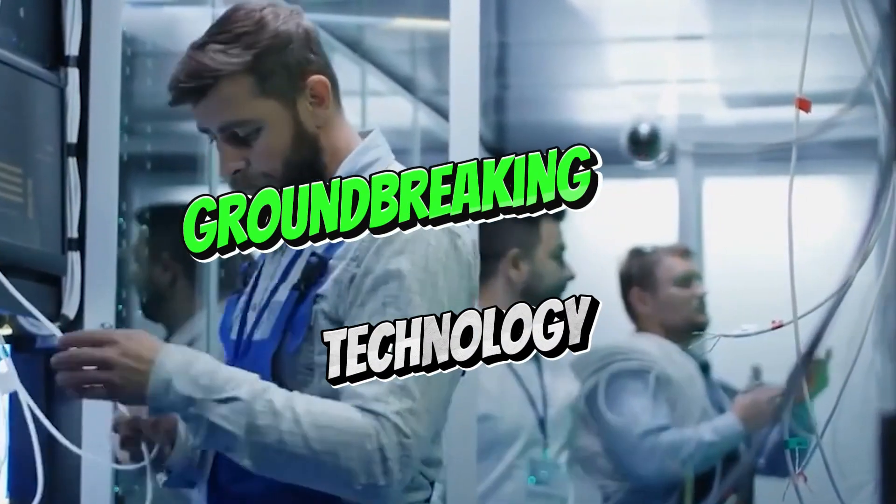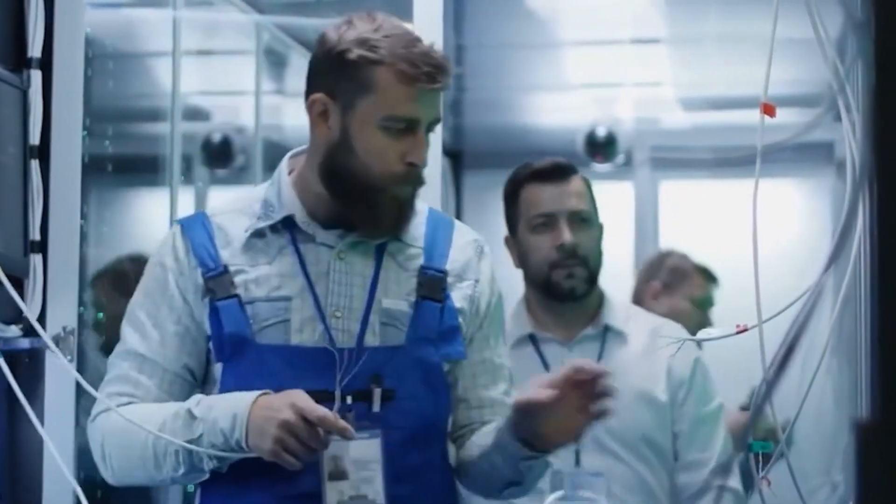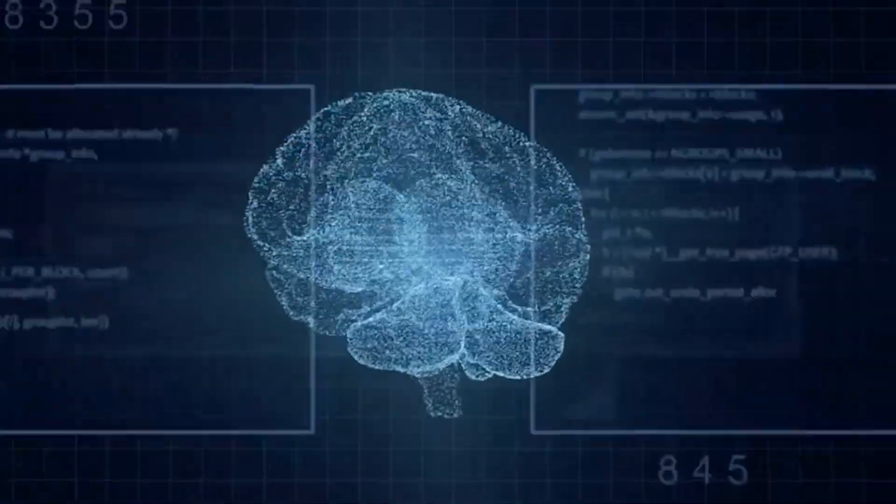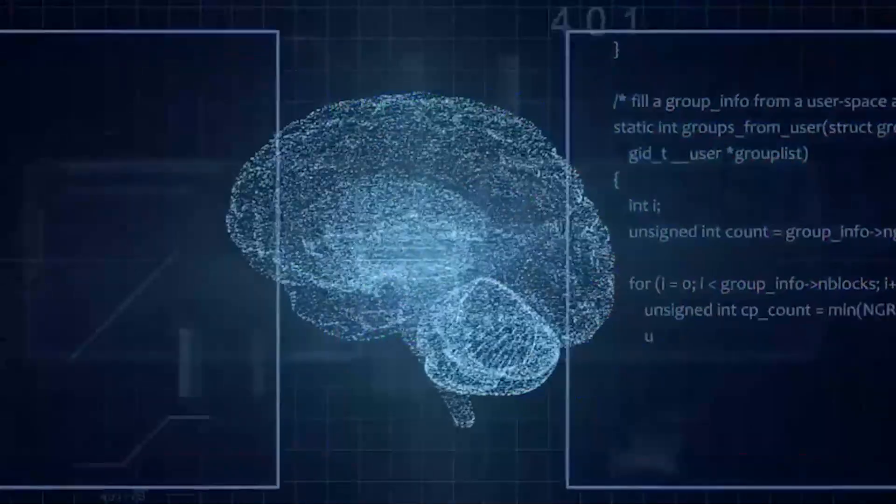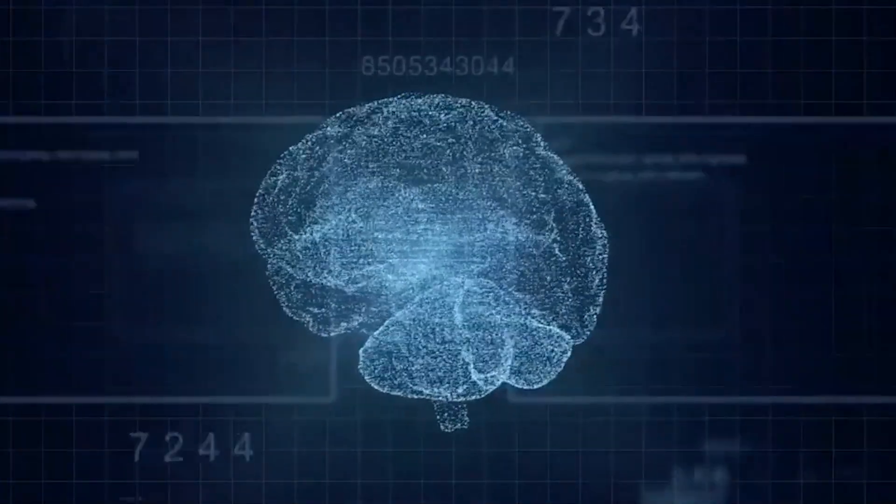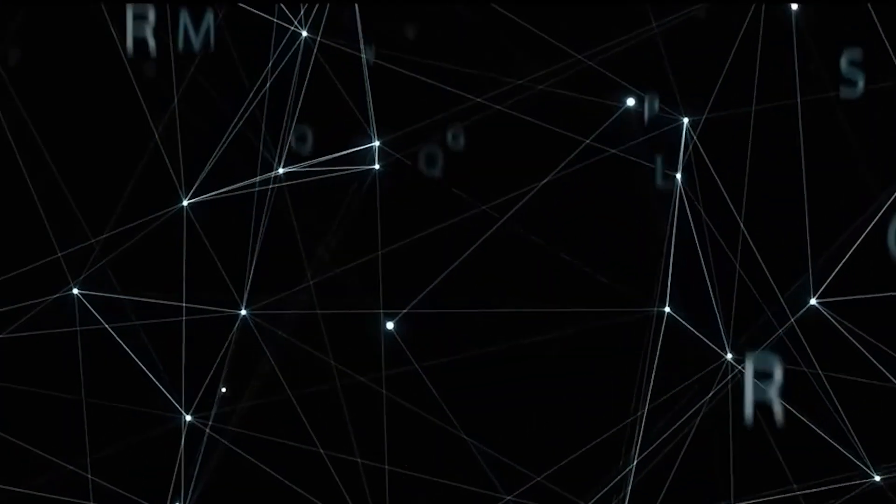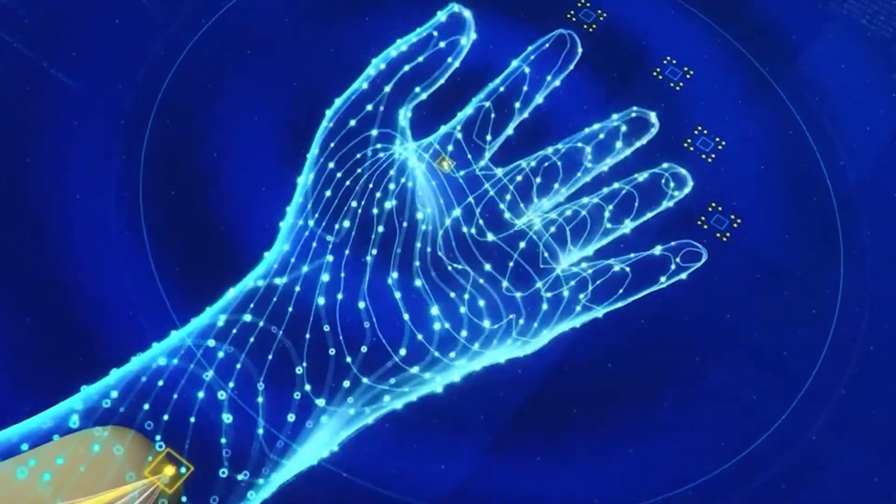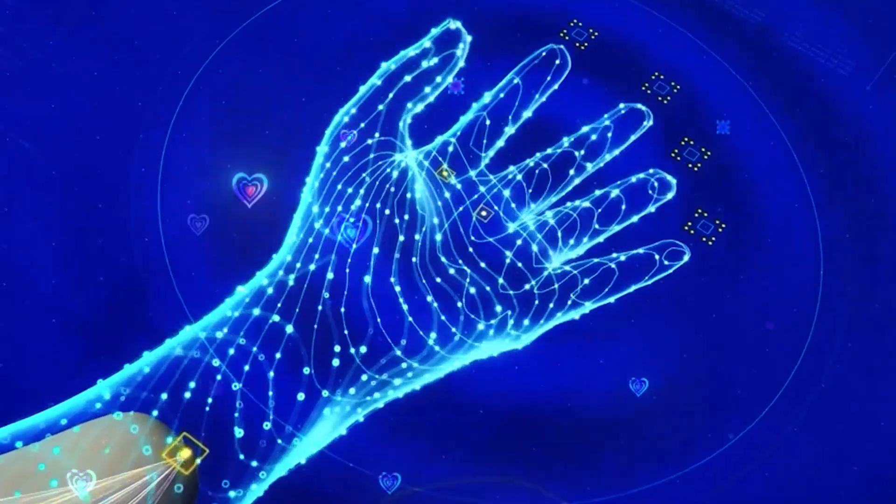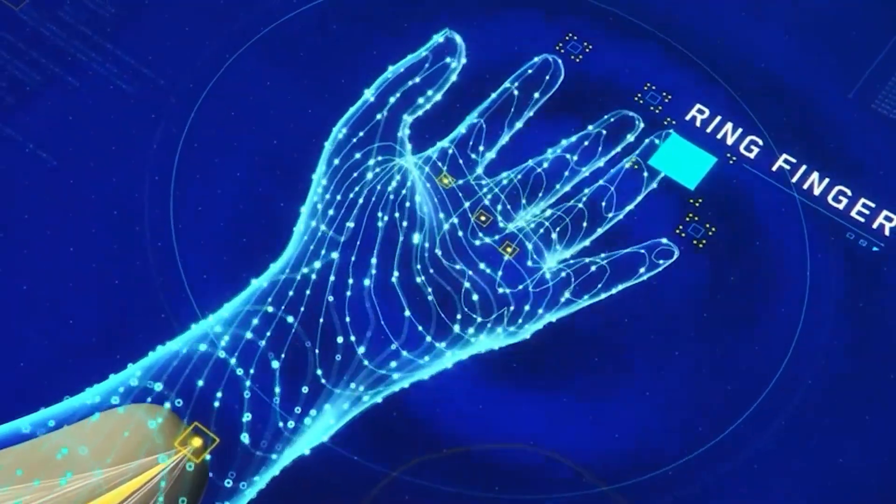However, such groundbreaking technology does not come without its challenges and criticisms. The scientific community has expressed skepticism regarding the feasibility and ethics of Neuralink's ambitions. Some experts argue that Musk's timelines are overly optimistic, and that the technology, while promising, is still in its infancy. The complexity of the human brain, with its billions of neurons and intricate networks, presents a massive hurdle.